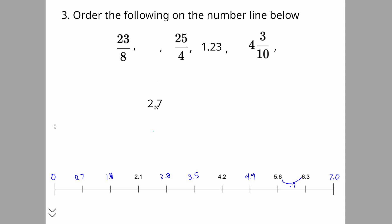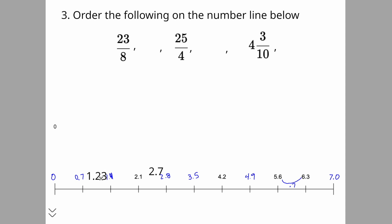So let's take 2.7 — that's going to be close to 2.8 but a little bit shy of that. And 1.23 — is it bigger than 1.4 or less than 1.4? It's actually less, even though there are more digits. So that fits in between there. Now 4 and 3 tenths is the same as 4 and 30 out of 100, which is 4.3 — just a little more than 4.2. So we'll put that one here.